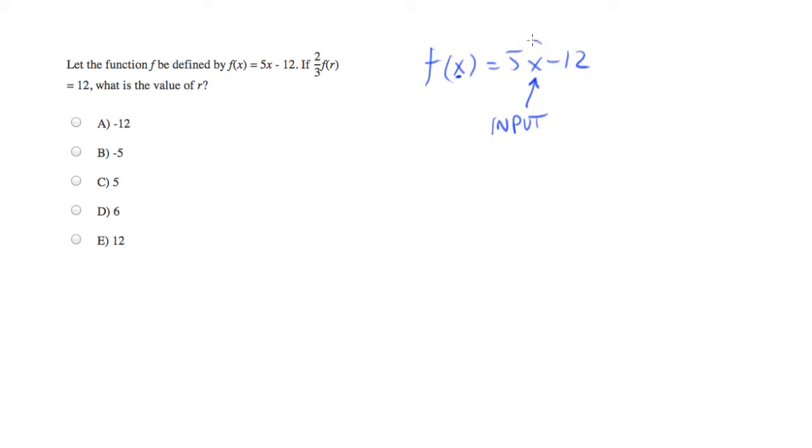The output of the function will be whatever the whole function evaluates to. So 5x minus 12 will be the output.